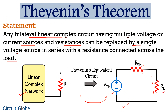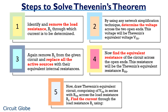Now you must be thinking how a complex circuit can be converted into this much simplified circuit. Today in this session, we will completely discuss the steps involved for converting a complex linear circuit into a simplified circuit using Thevenin's theorem. These are the steps that are required to be followed to convert a complex circuit into Thevenin's equivalent network. Let's now discuss each step separately.